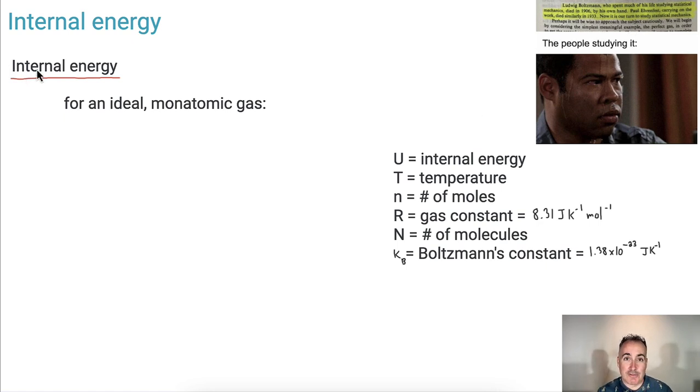So we have an equation for internal energy. The internal energy variable we use is U. We're going to have this equation here for an ideal gas and it has to be monatomic, which means it's just one element, like all argon or neon, just one atom, one element.